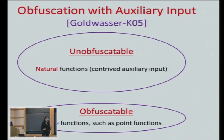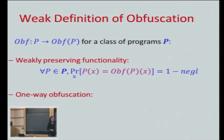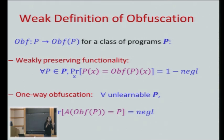So that was kind of annoying. But then people said: if you try to strengthen the definition and make it what you really want, you can't do it. Let's try to weaken it. How about taking the weakest possible definition? We want to preserve the functionality on average — we don't even care to preserve it on each and every input. And the obfuscation security: the only thing I want to say is you can't completely get rid of the obfuscation — you can't completely invert the function unless you can do it with black-box access. So for any function that's unlearnable with black-box access, you can't completely invert it.